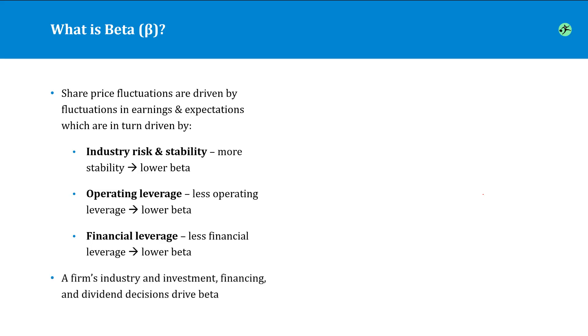So to summarize, the firm's industry as well as its investment, financing, and dividend decisions impact its beta. So you can see we're starting to tie this back to the corporate finance first principles.